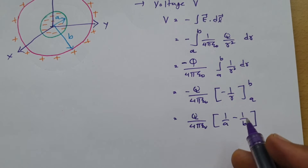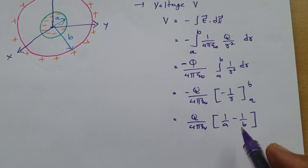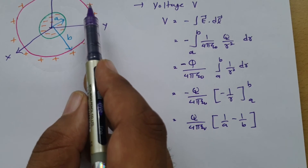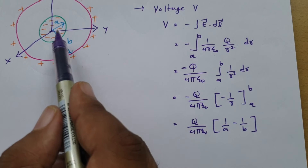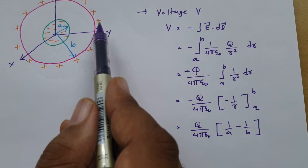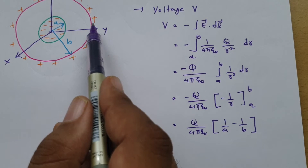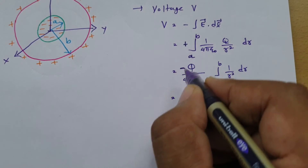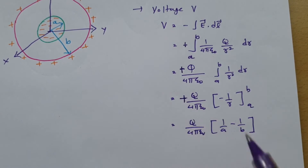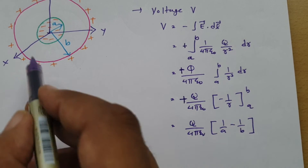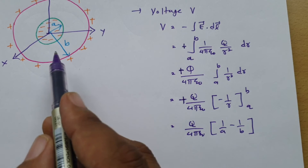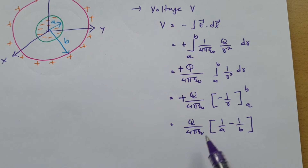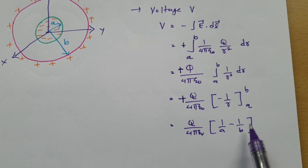This result of (1/a − 1/b) comes from the direction of the electric field. The outer sphere is positive and the inner is negative, so the electric field is directed inward. The minus-minus cancels to give plus, and therefore the potential V = Q/(4πε₀) × (1/a − 1/b).